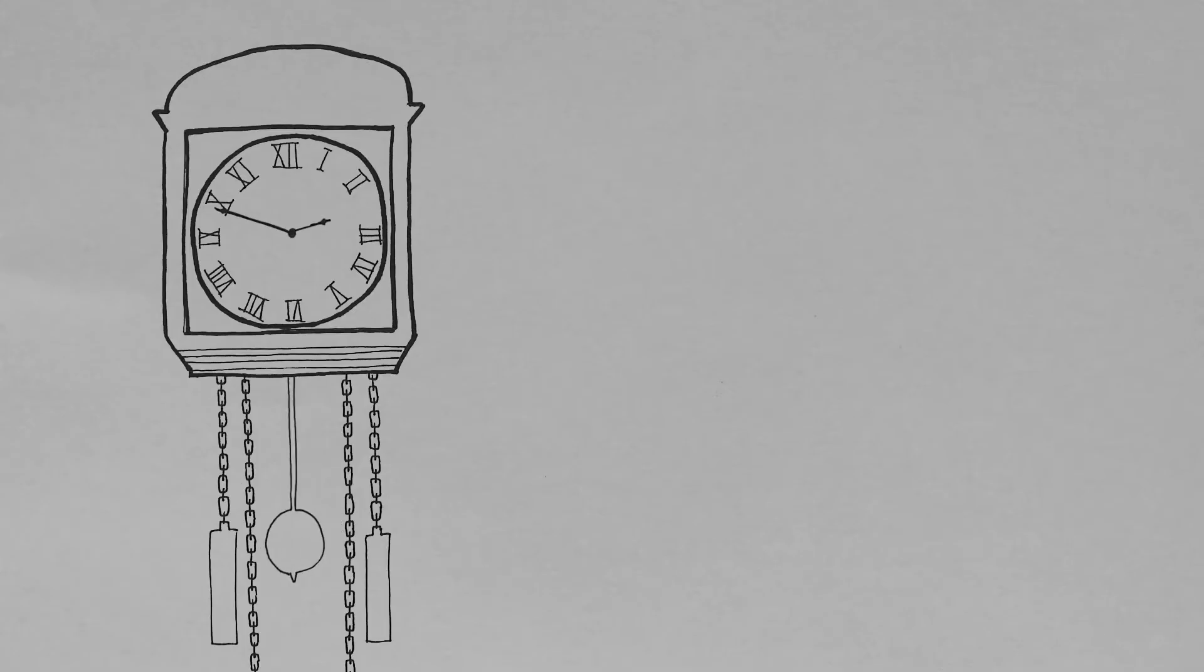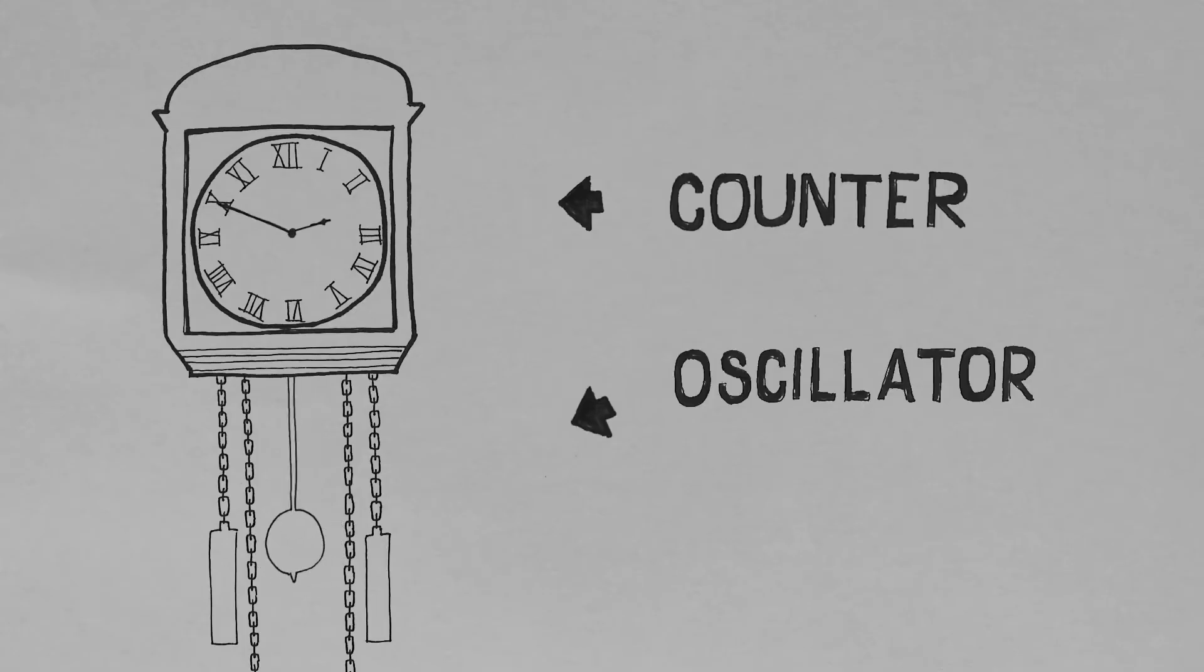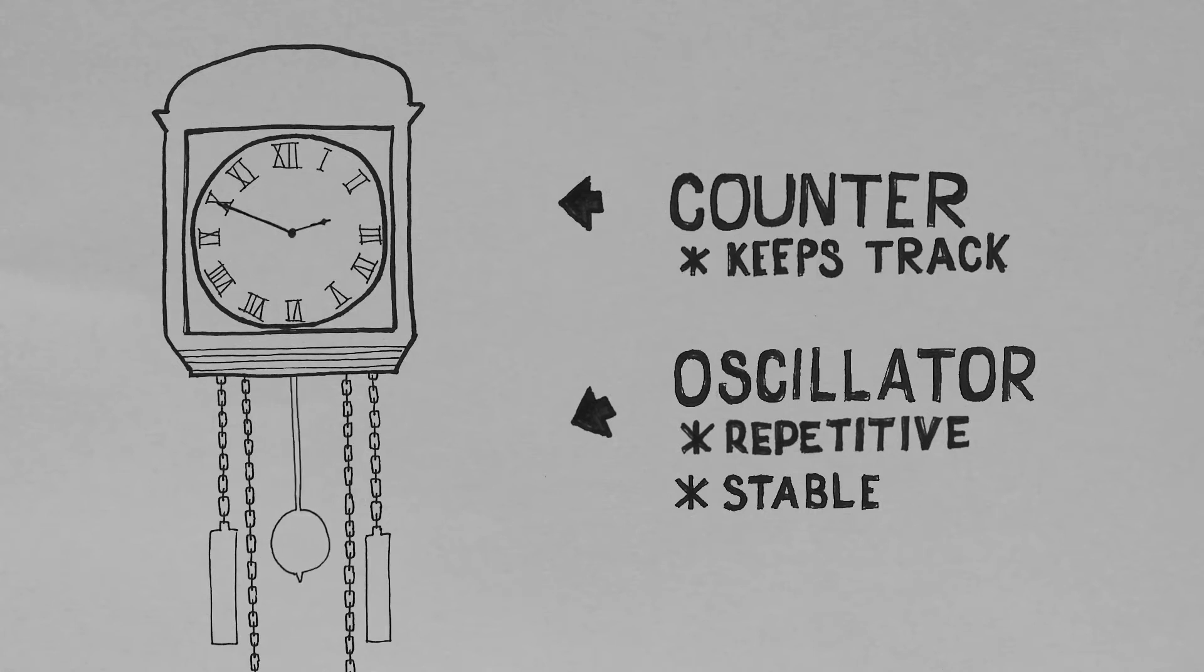A clock primarily consists of an oscillator and a counter. The oscillator needs to perform a repeating action at a constant rate, and a counter keeps track of how many cycles have passed.